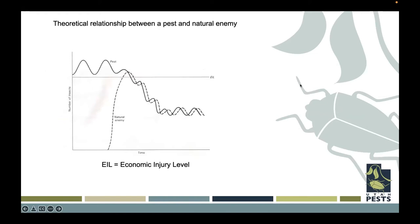Looking at this graph showing the ebb and flow of pest and natural enemy populations — we have the natural enemy population in the dotted line. If we have a really high pest population and we introduce that natural enemy, there's a ton of food available at first, so that natural enemy population is going to increase drastically, but then it's going to knock down that pest population. These two populations sort of track each other over time. What we're trying to do is keep those populations below what we call the economic injury level — where if the pest population is above this, the grower is losing money.